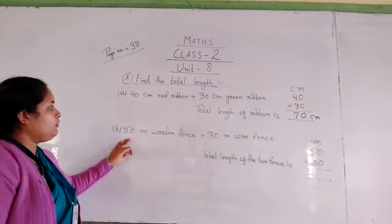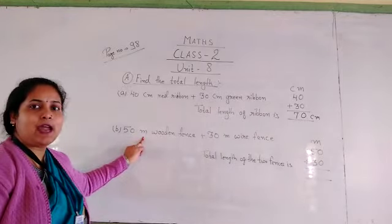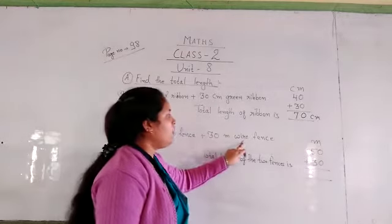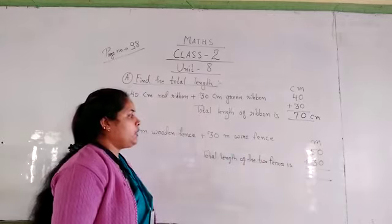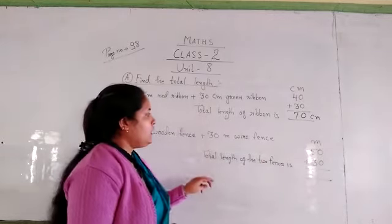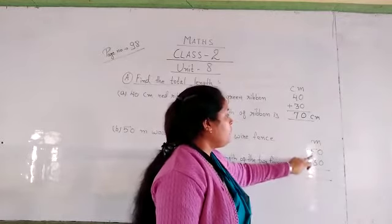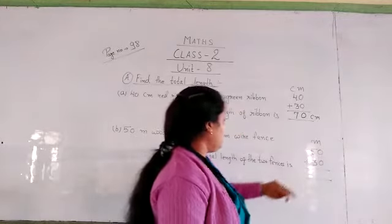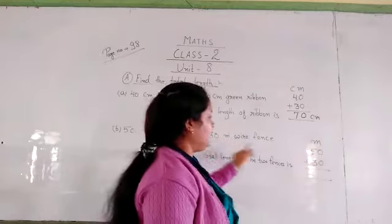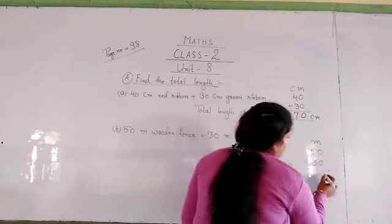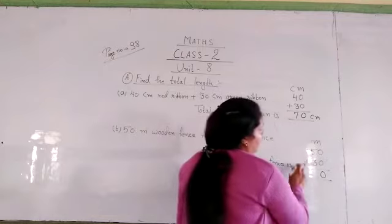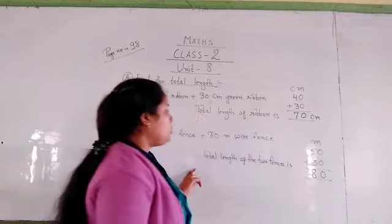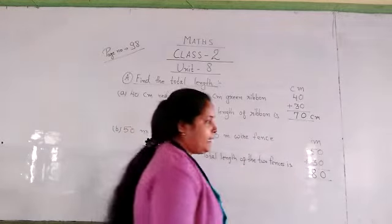Number 3: 50 meter wooden fence plus 30 meter wire fence. Here M stands for meter. We find the total length of these two fences. First we write meter. Wooden fence length is 50 meter and wire fence length is 30 meter. We add: 0 plus 0 is equal to 0, and 5 plus 3 is equal to 8. The total length of the two fences is 80 meter.